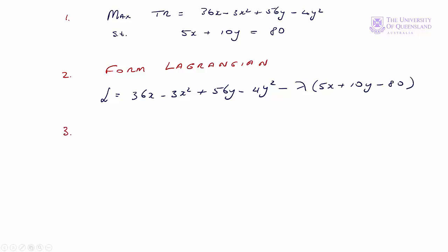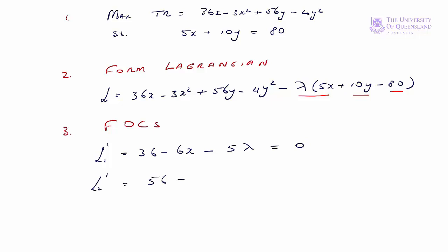Recall that's g of xy minus c: 5x plus 10y minus 80. Step three is to find the first order conditions. Differentiating the Lagrangian with respect to x gives L1 prime: 36 minus 6x — the y terms are treated as constants — minus 5 lambda, set equal to 0. The partial with respect to y gives L2 prime: 56 minus 8y minus 10 lambda equals 0.